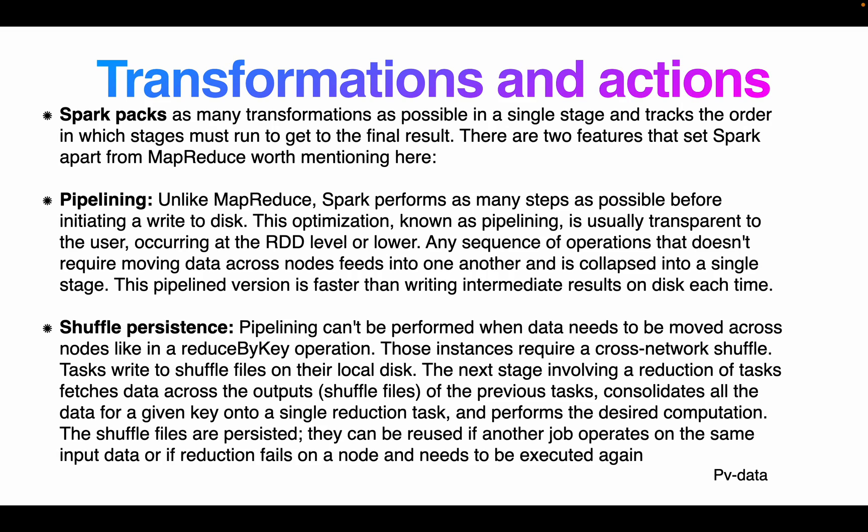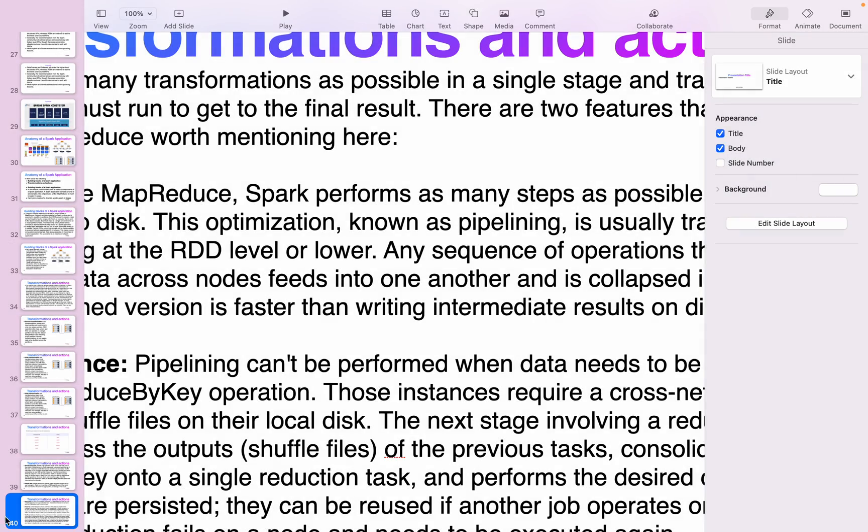Pipelining cannot be performed when data needs to be moved across nodes, as in a reduceByKey operation. In those cases, shuffle tasks write to simple files on their local disk. The next stage's reduction tasks fetch data from the output files of the previous stage, consolidating all data for a single reduction task to perform the desired computation. The shuffle files are persisted and can be reused if another job operates on the same input data, avoiding recomputation if a reducer node fails.